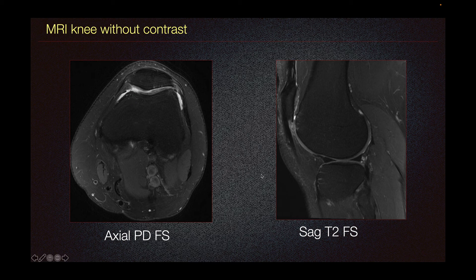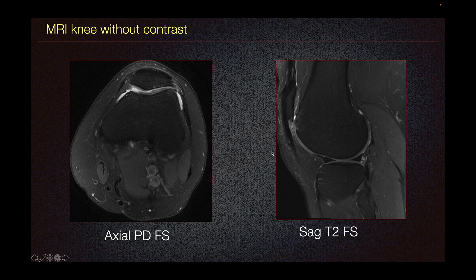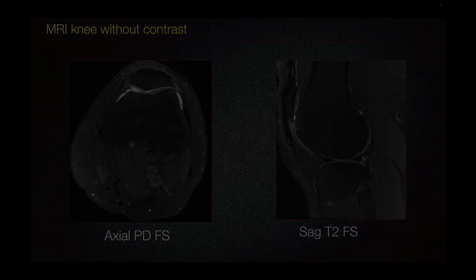Additionally, here on our sagittal T2 fat saturated imaging, we can see some edema or bright signal in the superior aspect of Hoffa's fat pad. Together, these findings could be seen in the setting of patellofemoral pain syndrome.